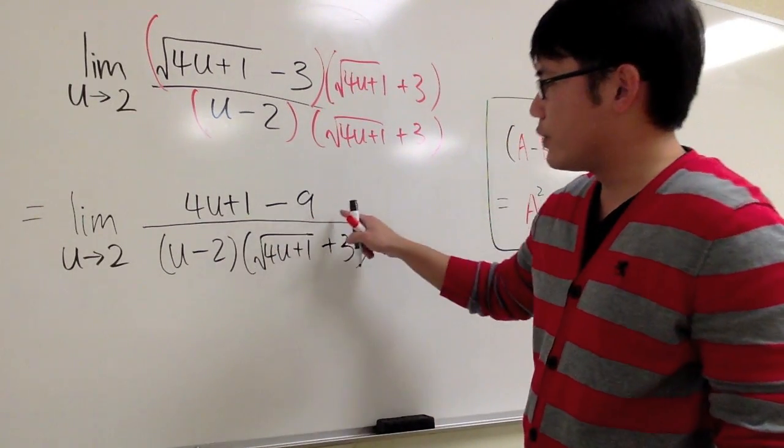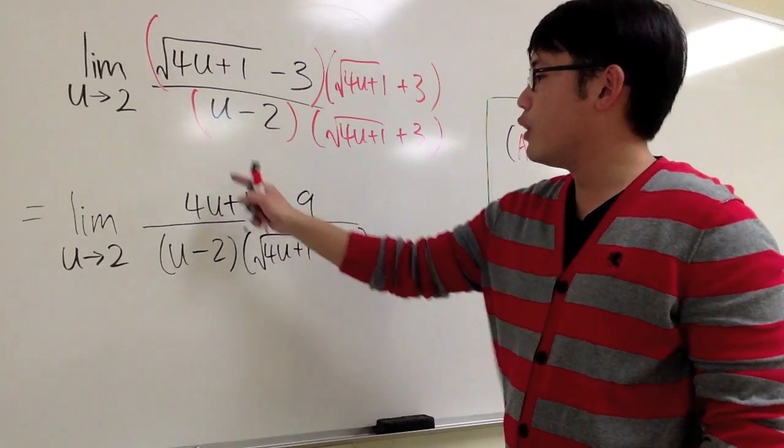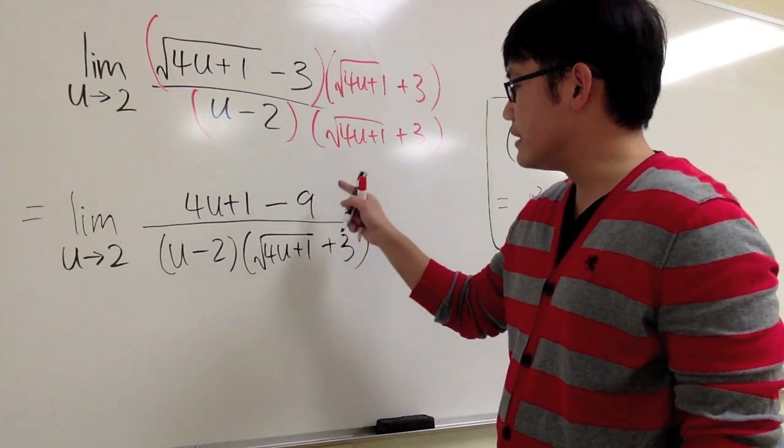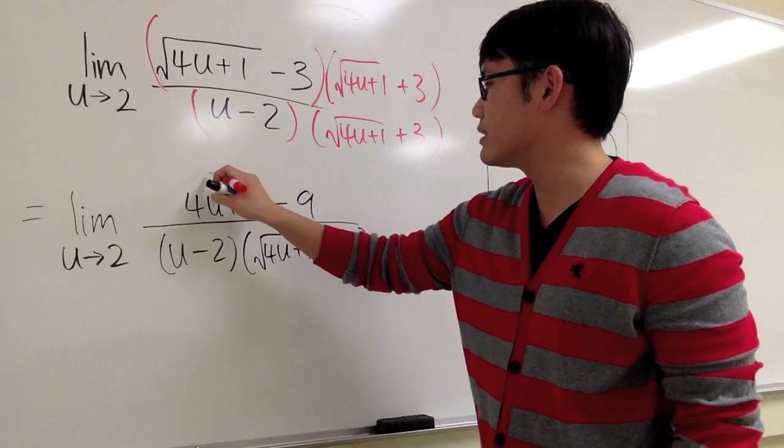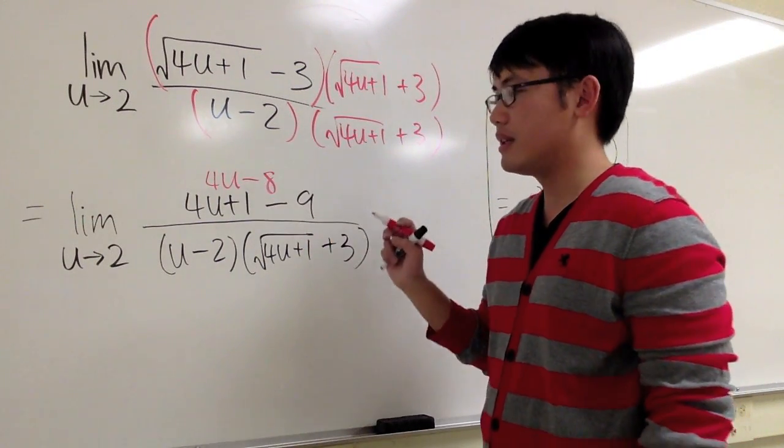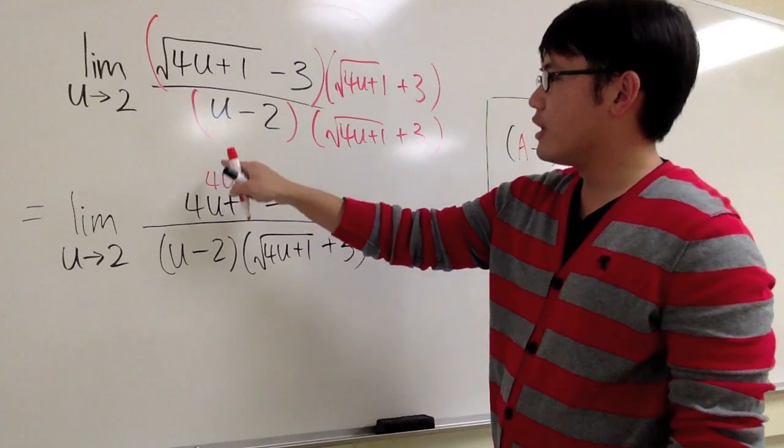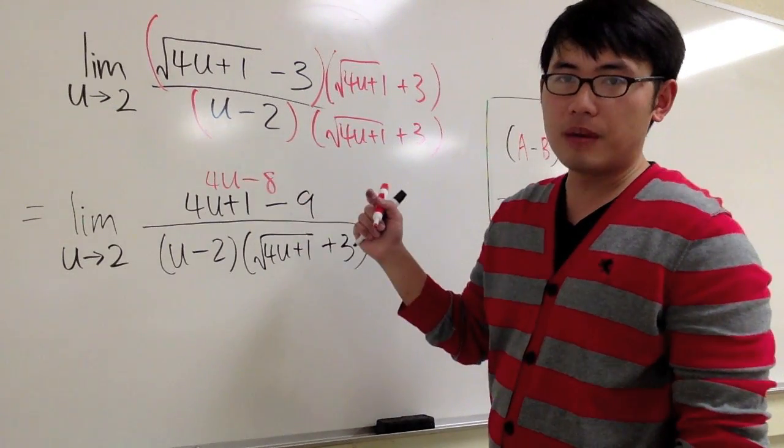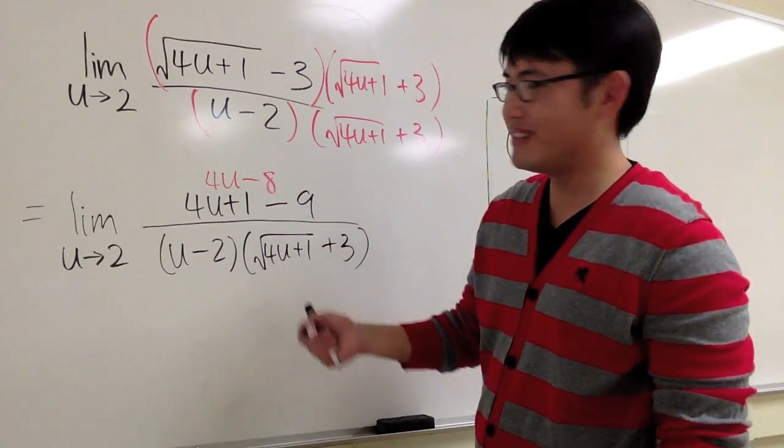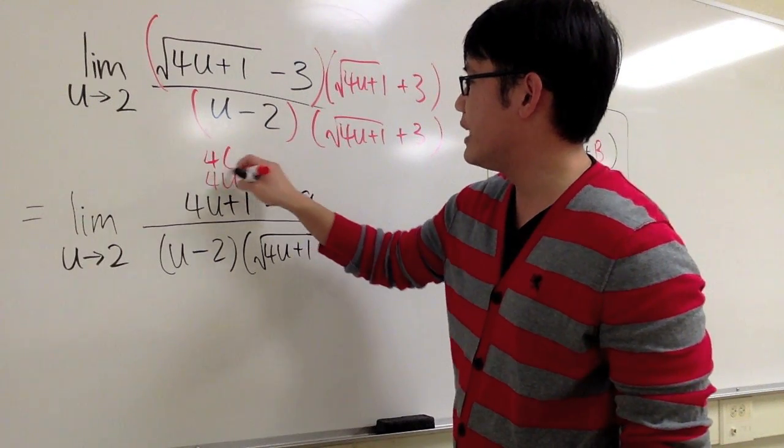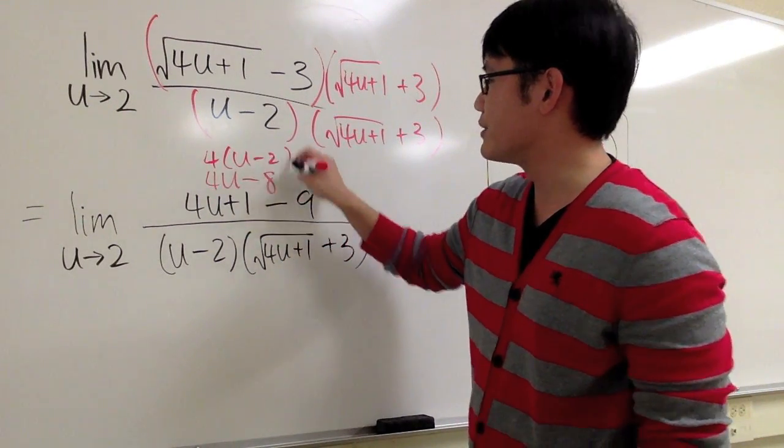Let's take a look at what we can do on the numerator. 4u plus 1 minus 9. Of course, we can write this as 4u minus 8. Furthermore, 4u minus 8, they have a 4 in common. I can factor out a 4. Let's factor out a 4, and then I will have u minus 2.